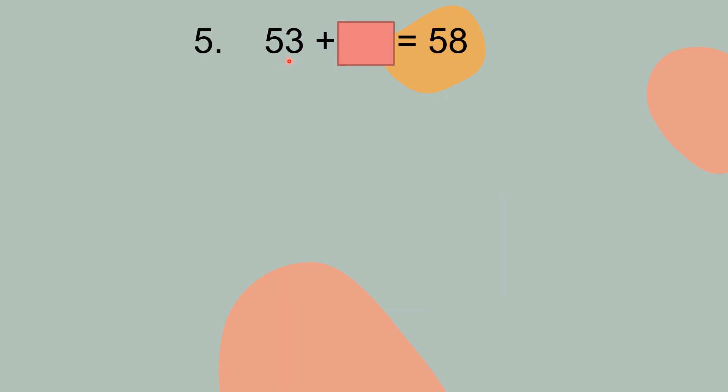Question number 5. 53 plus what equal to 58? For this question you can do in number line. You can use number line to find the answer. Now it starts from 53, right? 53. You write the number until 58.